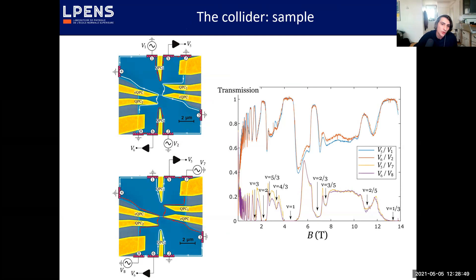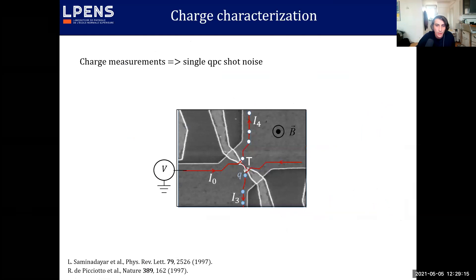Now let's go to the sample. I have a lot of contacts on which I can perform some locking measurement to measure the transmission at the various QPCs and by sweeping the field I can ensure that I have a perfect transmission and no back-reflection for the state of interest that will be ν=2 and ν=3 here for the integer state and ν=1/3 for the Laughlin state.